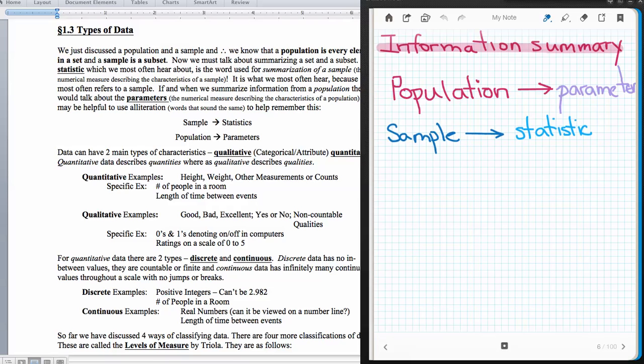The sample is a subset of the population. From the sample, we will create summary statistics, and the statistics will tell us about the parameters. We get a sample from the population, and that sample will be used to summarize and find statistics, which then will tell us about the parameters of the population.